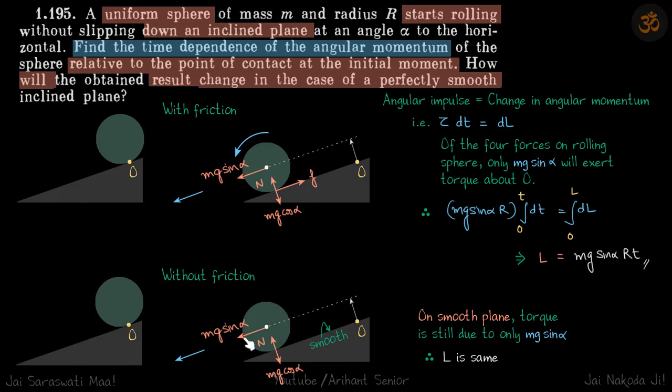The sphere is still not moving normal to the surface, so normal and Mg cos alpha are still the same. In this case also, the only force causing torque is Mg sin alpha.